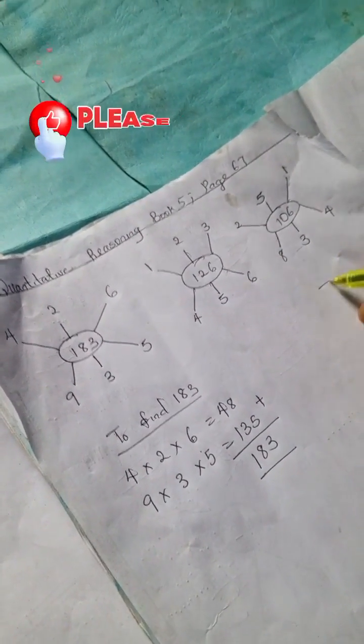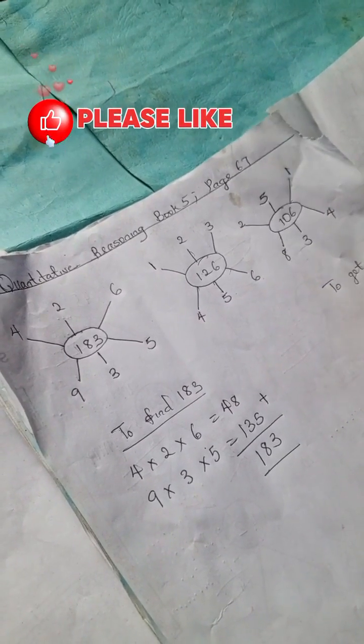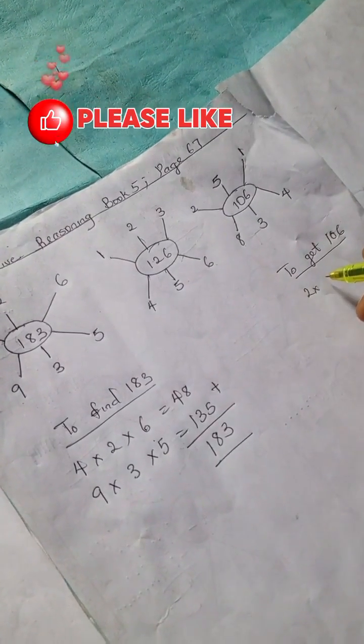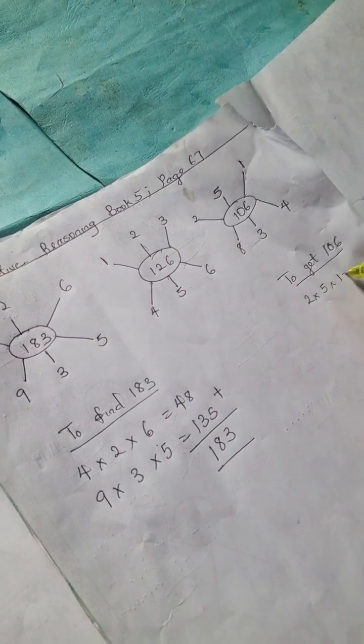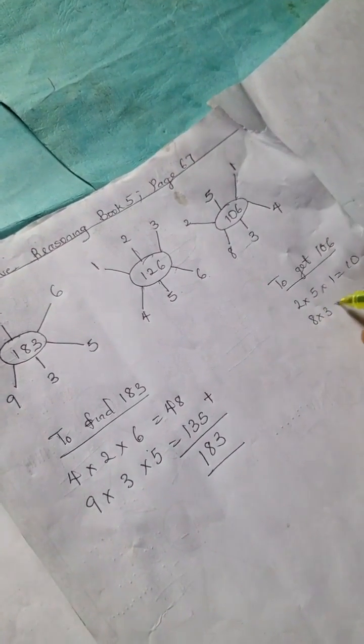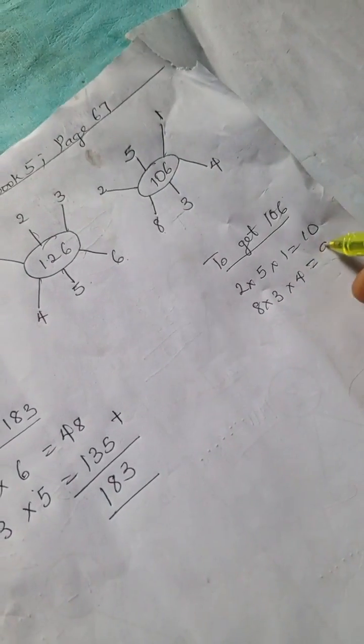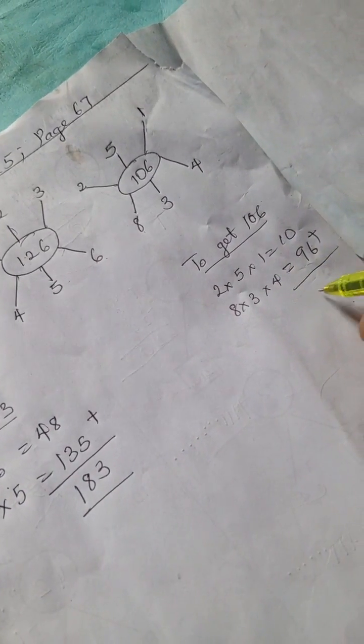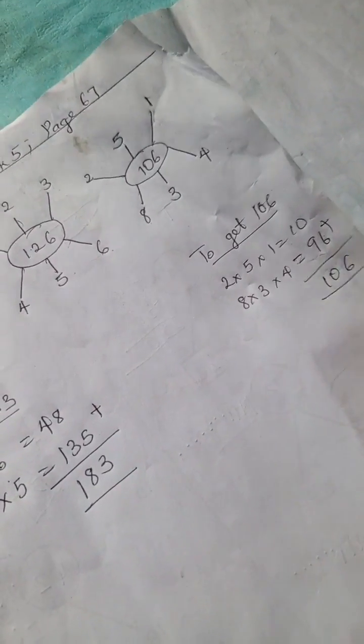We're going to do the same for this. To find or to get 106, we're going to have 2 times 5 times 1 equals 10, and 8 times 3 times 4, we have 96. And when we add them up together, 10 plus 96 is 106.